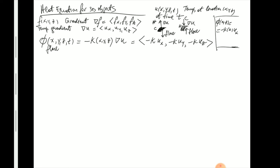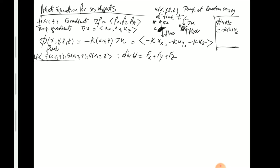We'll also need the divergence of a function. If you have a vector field with components f(x,y,z), g(x,y,z), h(x,y,z), the divergence is the sum of the partial derivatives: f_x plus g_y plus h_z. We're going to use the divergence theorem at some point in the process of deriving the heat equation.